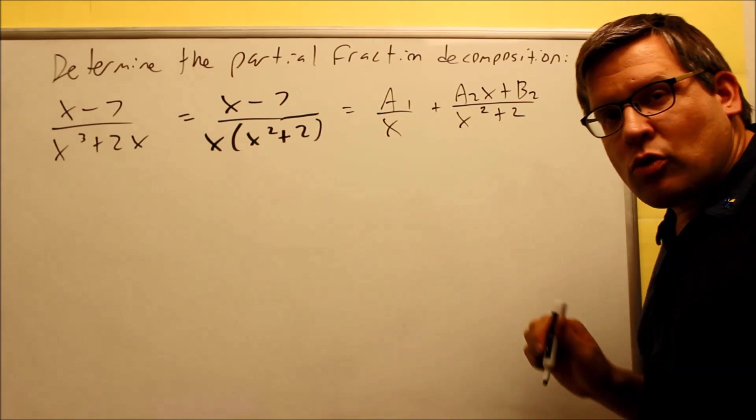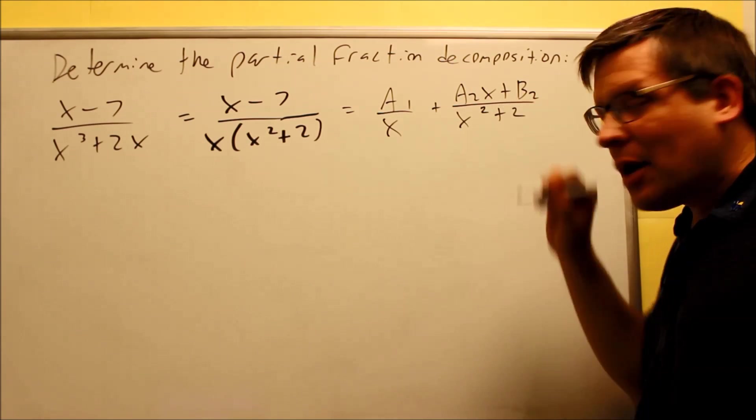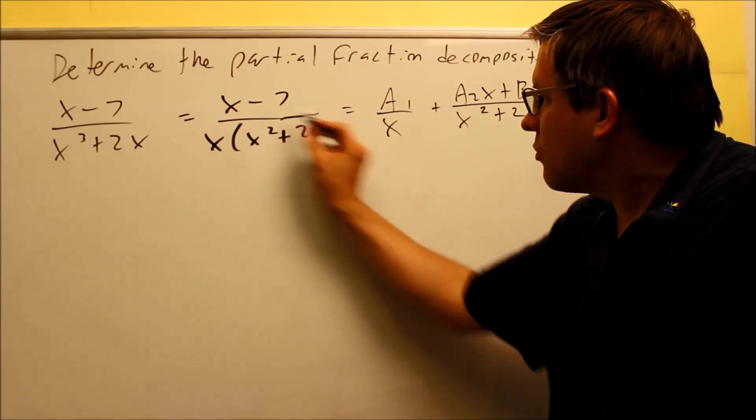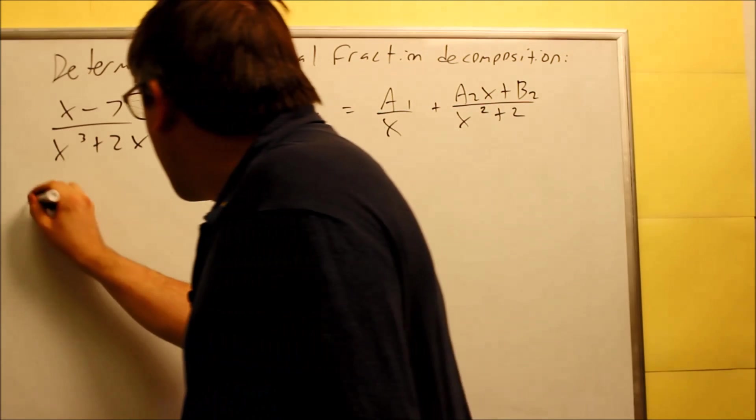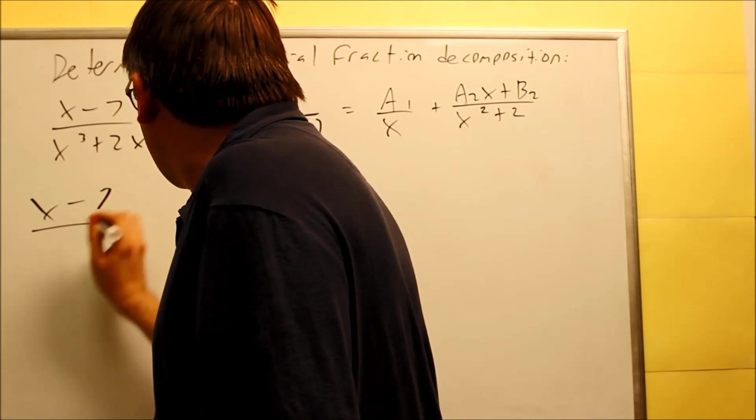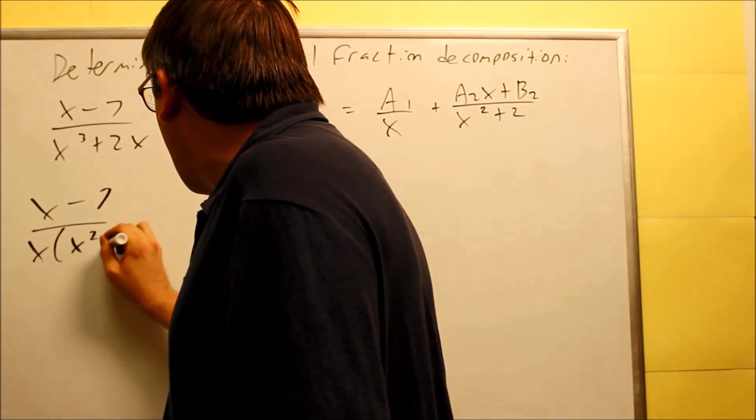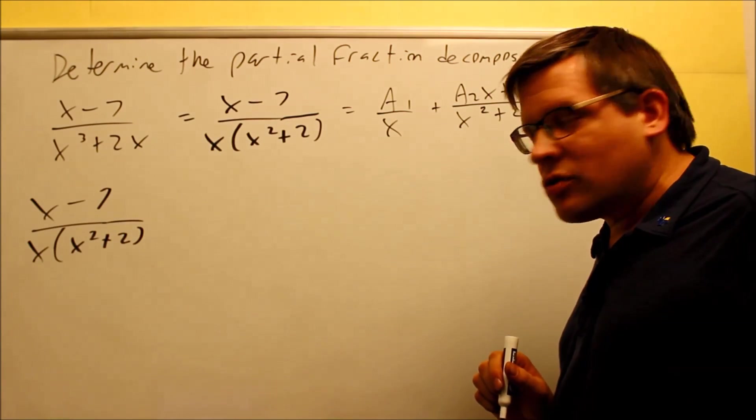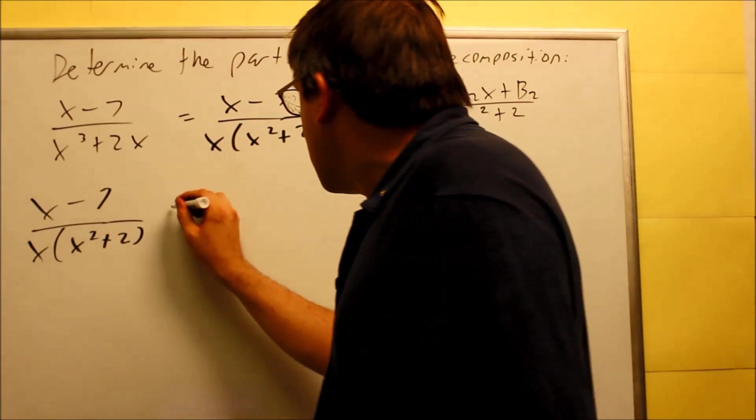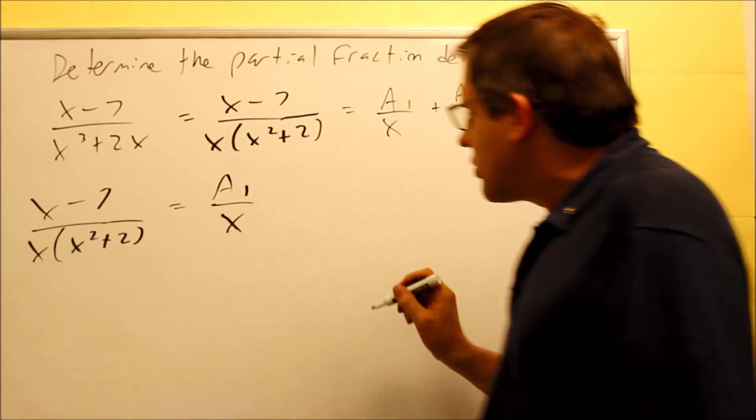So now that we have this, we're ready to get our common denominators. We have to make all the bottoms look like x times x squared plus 2. So what I do is I'm going to multiply each one by what it's missing.